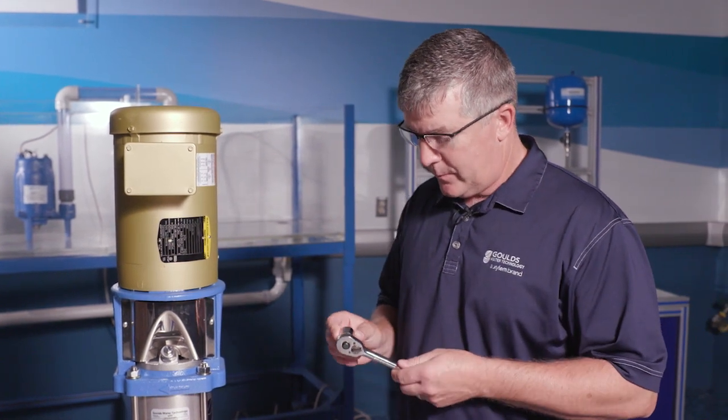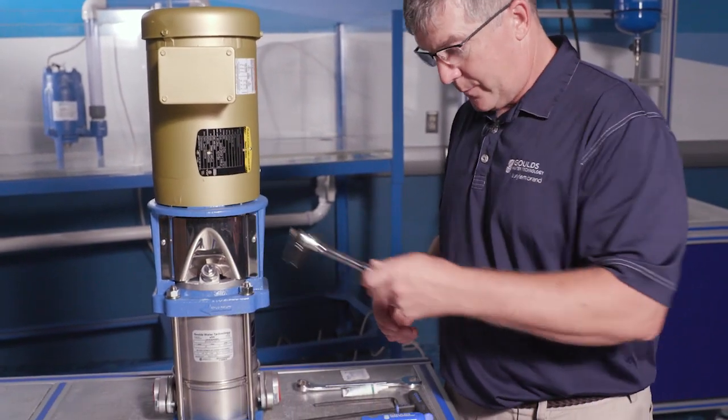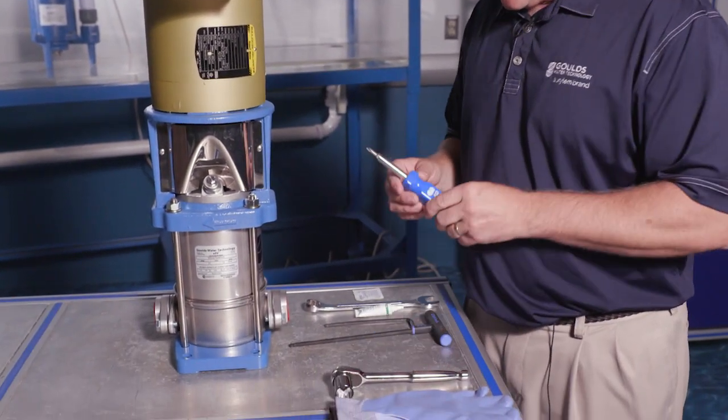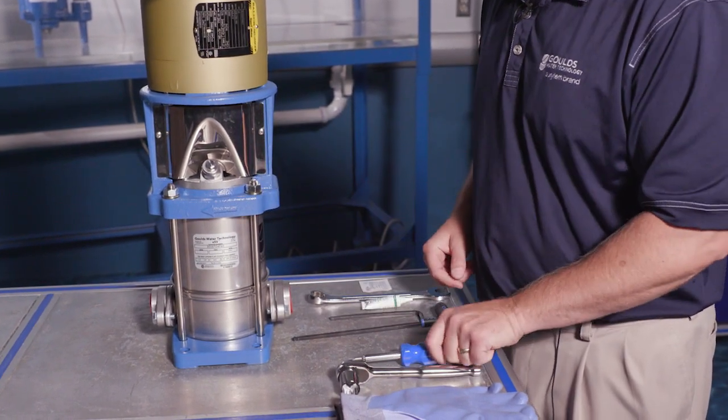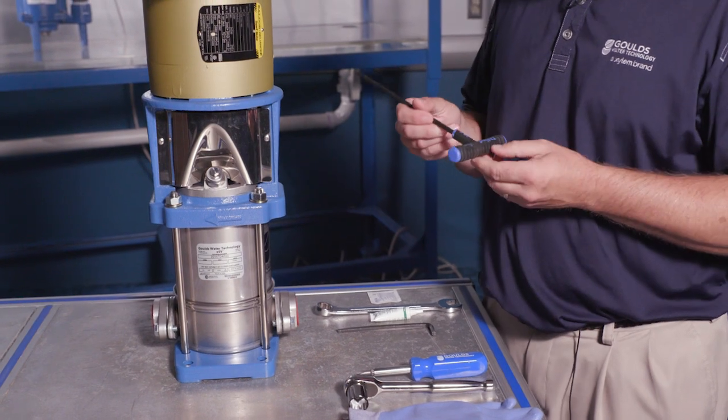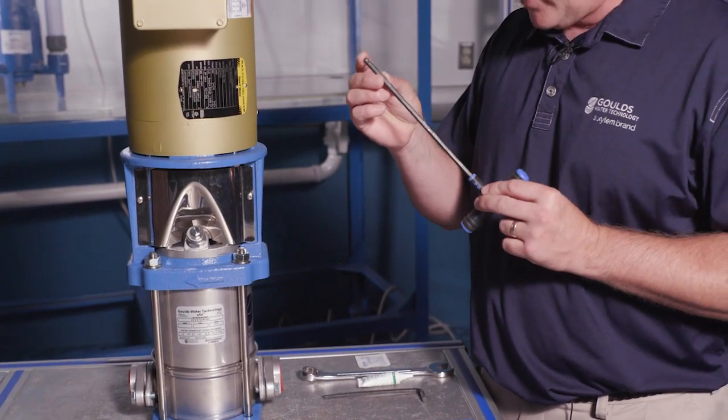Next is a 19 millimeter socket or wrench to take the bolts off. Need a basic Phillips head screwdriver to take our coupling guards off. For that coupling itself, you need a six millimeter hex. This happens to be a ball end hex.